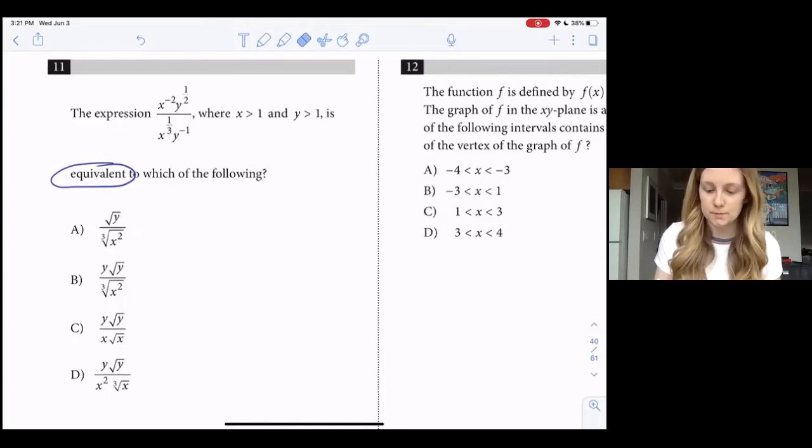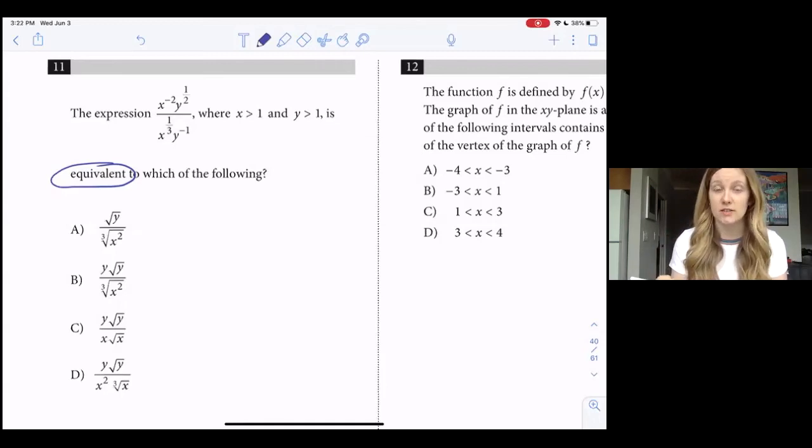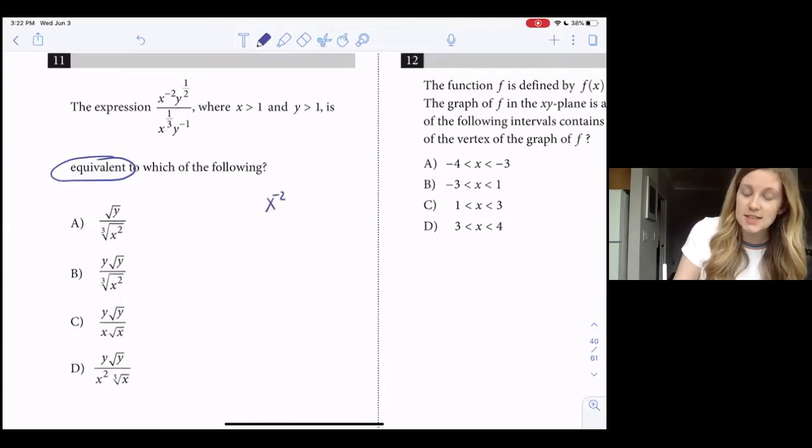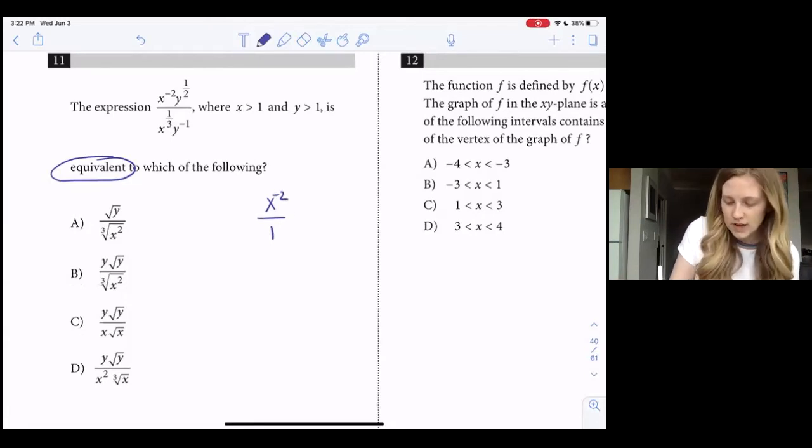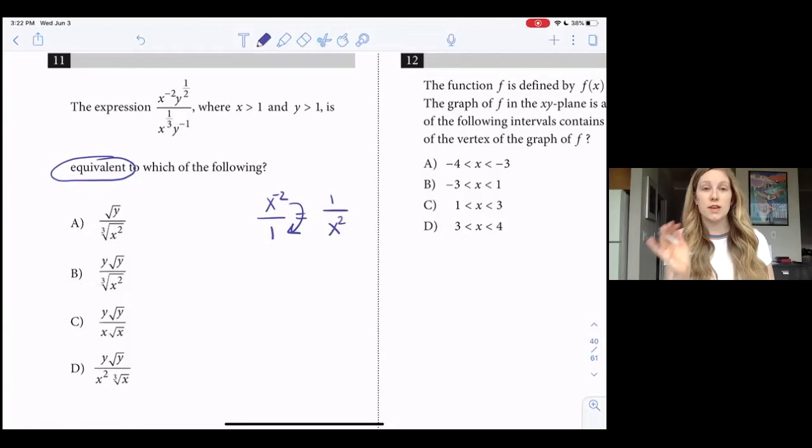The first thing we need to do is tackle these negative exponents. When we have a negative exponent, it means that it's on the wrong side of the fraction. If I have something like x to the negative two, that's technically over the number one. If I want to write that as a positive exponent, I need to move it into the denominator. These two things are equivalent: x to the negative second power is the same thing as one over x squared. And the opposite is true where if it were in the denominator, I would move it on top.